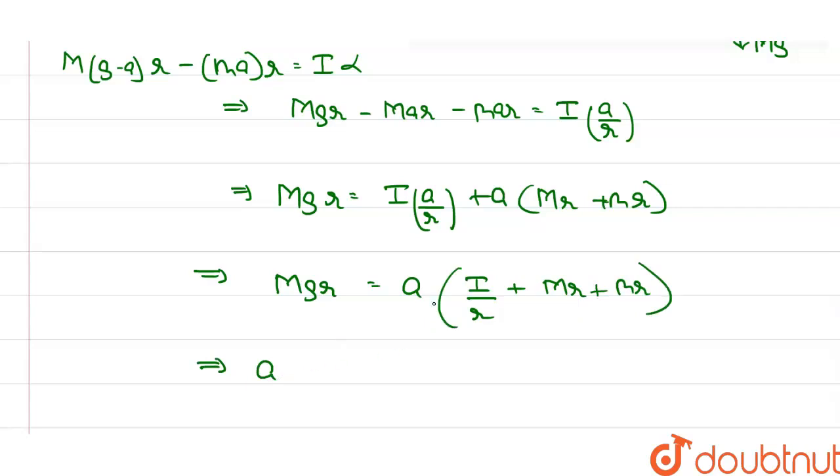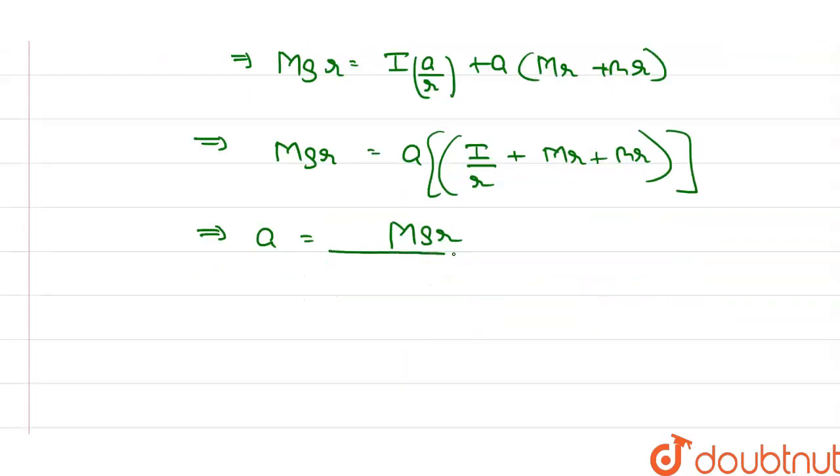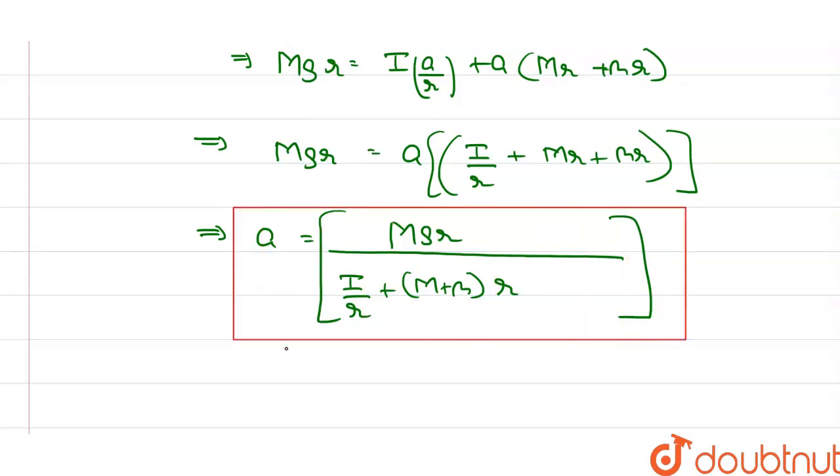Taking the coefficient of A to the other side, we get capital Mg into small r divided by I upon R plus capital M plus small m into r. This is the acceleration of mass capital M.